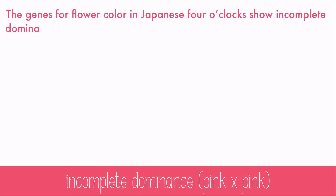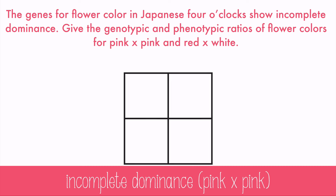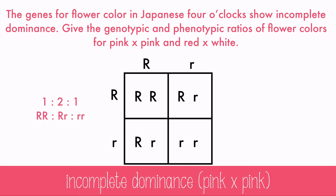Let's try a problem. The genes for flower color in Japanese 4 o'clock show incomplete dominance. Give the genotypic and phenotypic ratios of flower colors for pink by pink and red by white. Let's cross two pink flowers first. They have red and white alleles. Fill out the Punnett square and you see the three possible genotypes: big R big R, big R little r, and little r little r.